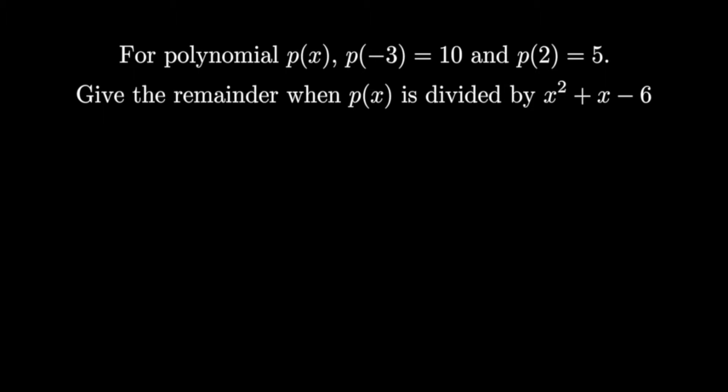The first thing to notice here is that x squared plus x minus 6 is factorable into x plus 3 times x minus 2. What this means is, just like in problem 1, we can express p of x as q times x plus 3 times x minus 2 plus r.